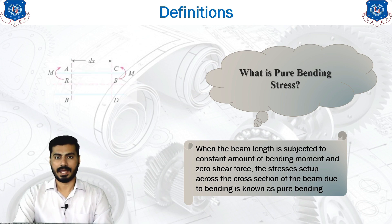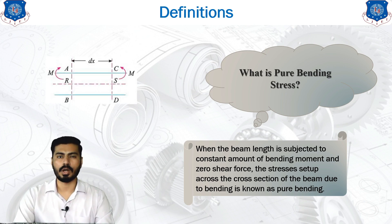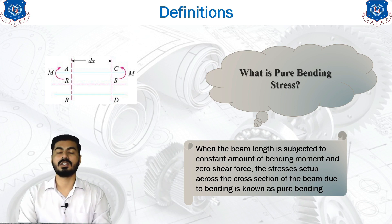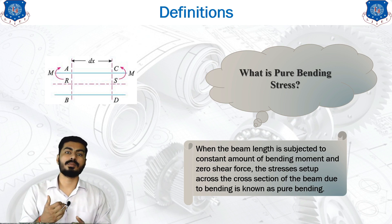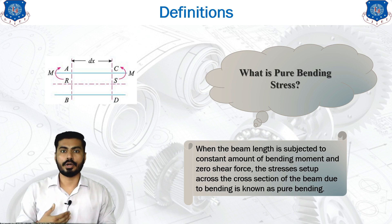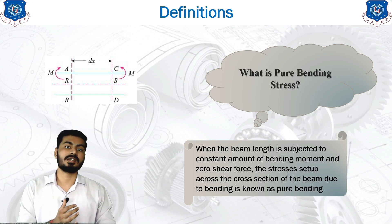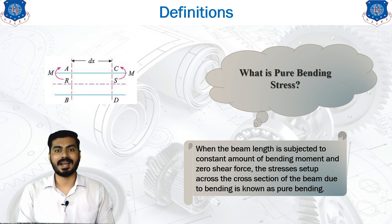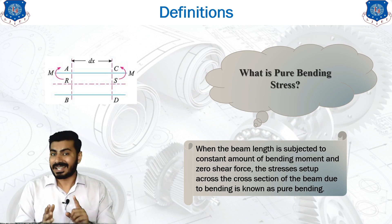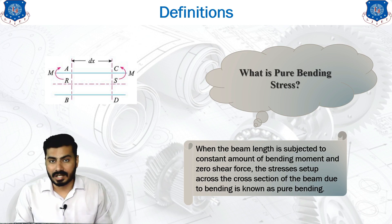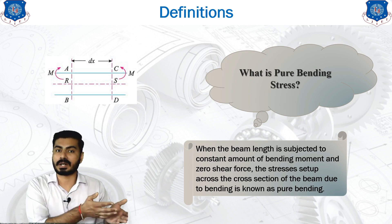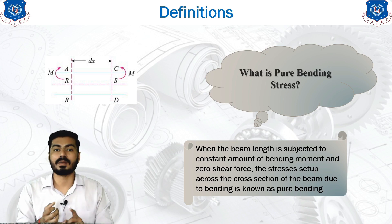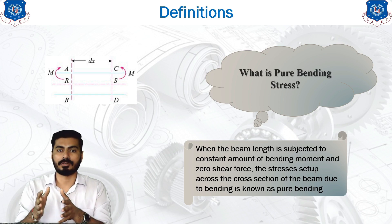As you can see in this diagram, a small length of the beam having the dx distance is considered, where both sides of the length are subjected to the bending moment only and no shear forces are introduced onto the beam. This is a condition we need to assume in every theory of bending stress. There might be different kinds of stresses generated due to different conditions, but the bending stress is generated due to pure bending conditions only. There are no other stresses which come into the picture of the bending stress theory.